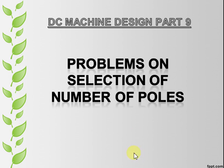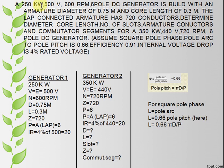DC machine design part 7, problems on selection of number of poles. A 250 kilowatt, 500 volt, 600 rpm, six pole DC generator is built with an armature diameter of 0.75 meter and core length of 0.3 meter. The lap connected armature has 720 conductors. Determine diameter, core length, number of slots, armature conductors and commutator segments for a